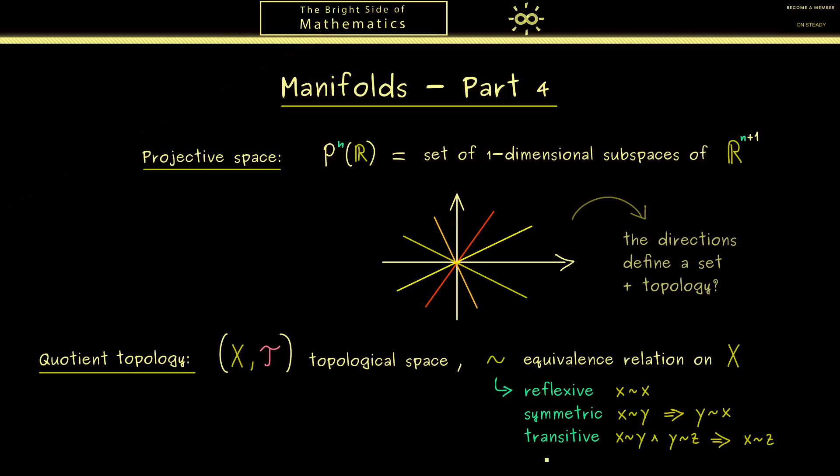So an object with these three properties we call an equivalence relation on X. And indeed we often have such a thing. For example for the projective space you can immediately think of a suitable equivalence relation we need to define the lines.